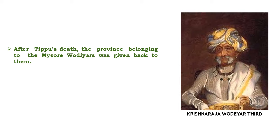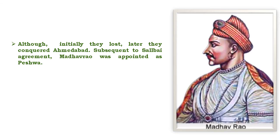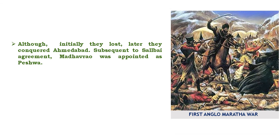The rest of the kingdom was shared by the English, the Marathas, and the Nizam. The British took advantage of the situation and waged a war. Although initially they lost, later they conquered Amidabad. Subsequent to the Salbhai agreement, Madhav Rao was appointed as Peshwa. This was the first Anglo-Maratha war.